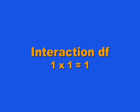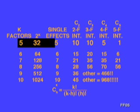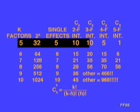Back to the information content of this array of two-level design structures. With five factors, there are 32 treatment combinations. There are five degrees of freedom for single effects, ten for the two-factor interactions, ten for the three-factor interactions, five for the four-factor interactions, and one for the five-factor interaction. We determine the number of interactions with the combinations formula.